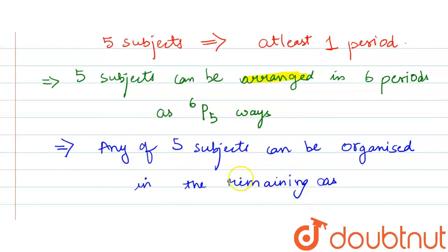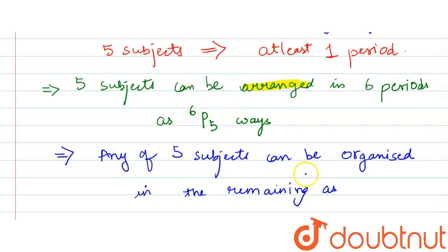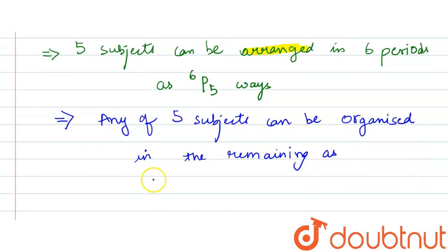As we have to select a period for five subjects, we will use combination here. So in 5C1 ways.